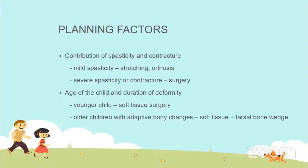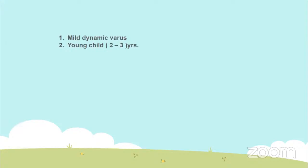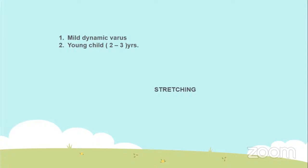Additional planning factors for varus deformity: whether the deformity is spastic or contracted, age of the child, and duration of deformity. Younger children may need only soft tissue surgery; older children with adaptive bony changes may need soft tissue correction combined with tarsal bone wedge. Clinical scenarios: mild dynamic varus in a very young child — stretching. Young child around three years with dynamic varus responding well to stretching — rigid thermoplastic ankle foot orthosis with trim line anterior to malleoli because varus is associated.